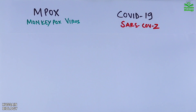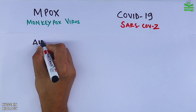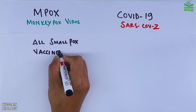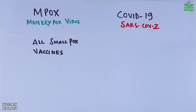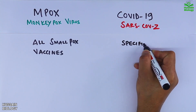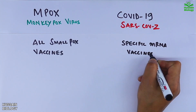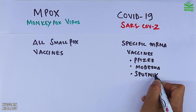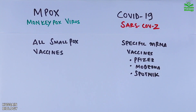For mpox, all smallpox vaccines have been administered for mpox cases. For COVID-19 we have specific mRNA vaccines like Pfizer-BioNTech, Moderna, Sputnik, etc. Treatments include antiviral medications for both diseases. This concludes the comparison of both diseases.